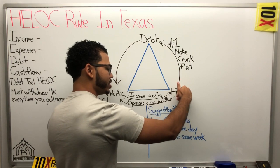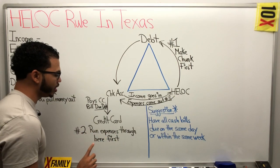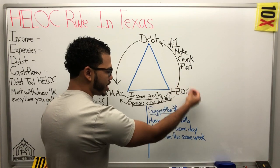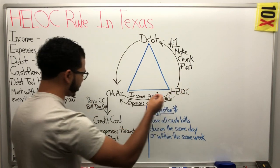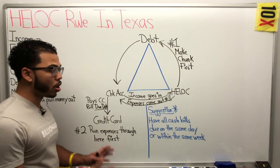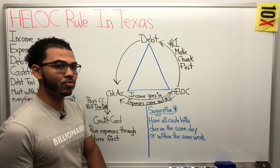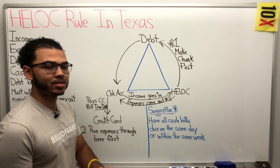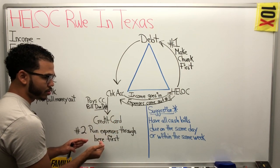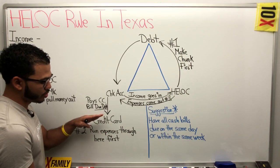So before we take out money, my first suggestion would be to have a credit card in addition to your debt tool — your main primary debt tool that you're using. Let's open up a credit card to run the majority of your expenses through that credit card. So any bill that can be paid with a credit card, any expense that can be paid with a credit card, let's run it through here first. We're running up all of our bills throughout the month.